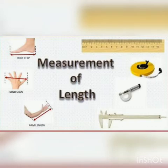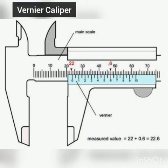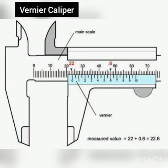A vernier caliper is used for measuring the distance between two opposite sides of a surface. We can measure the internal and external dimensions, and even the height of an object with accuracy. The vernier caliper used in the laboratory incorporates a main scale and a sliding vernier scale, which allows reading to the nearest 0.02 millimeter. This instrument may be used to measure outer dimensions using the main jaws, inside dimensions using the smaller jaws at the top, and depth using the stem.